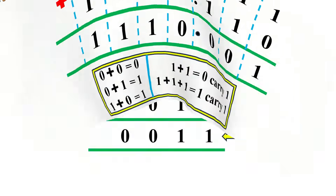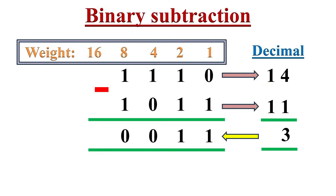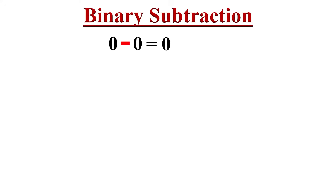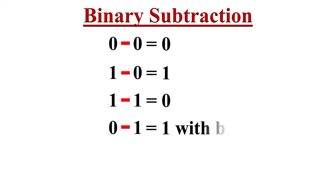Now let's see how to do binary subtraction. First, let's understand the rules for binary subtraction. In binary: 0 minus 0 equals 0; 1 minus 0 equals 1; and 1 minus 1 equals 0. But 0 minus 1 equals 1 when 1 is borrowed from the next column. These are the rules for binary subtraction. The first three rules are simple, just like normal digit number system subtraction.